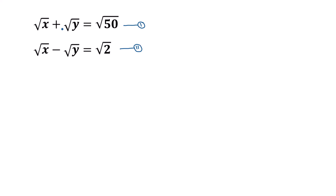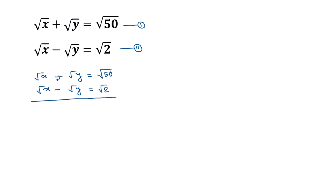If we add equation 1 and equation 2, we can write: square root of x plus square root of y equals square root of 50 from equation 1, and square root of x minus square root of y equals square root of 2 from equation 2. Now if we add these two equations, this positive square root of y and this negative square root of y will cancel out, and it will be square root of x plus square root of x — this is 2 times square root of x — is equal to square root of 50 plus square root of 2.